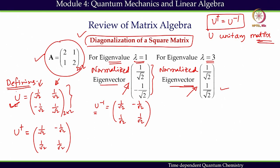Whenever U dagger equals U inverse, we say that U is a unitary matrix. So the matrix I have defined with the help of the individual normalized eigenvectors turns out to be a unitary matrix. In fact, the matrix formed from the normalized eigenvectors of any matrix will always be a unitary matrix.